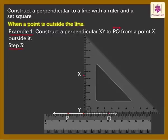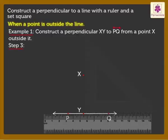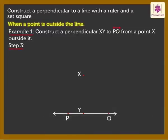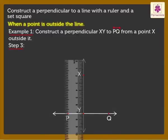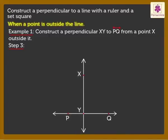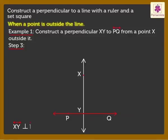Step 3: Remove the Set Square. Draw Line XY using a Ruler. Thus, we say Line XY perpendicular to Line PQ is obtained.